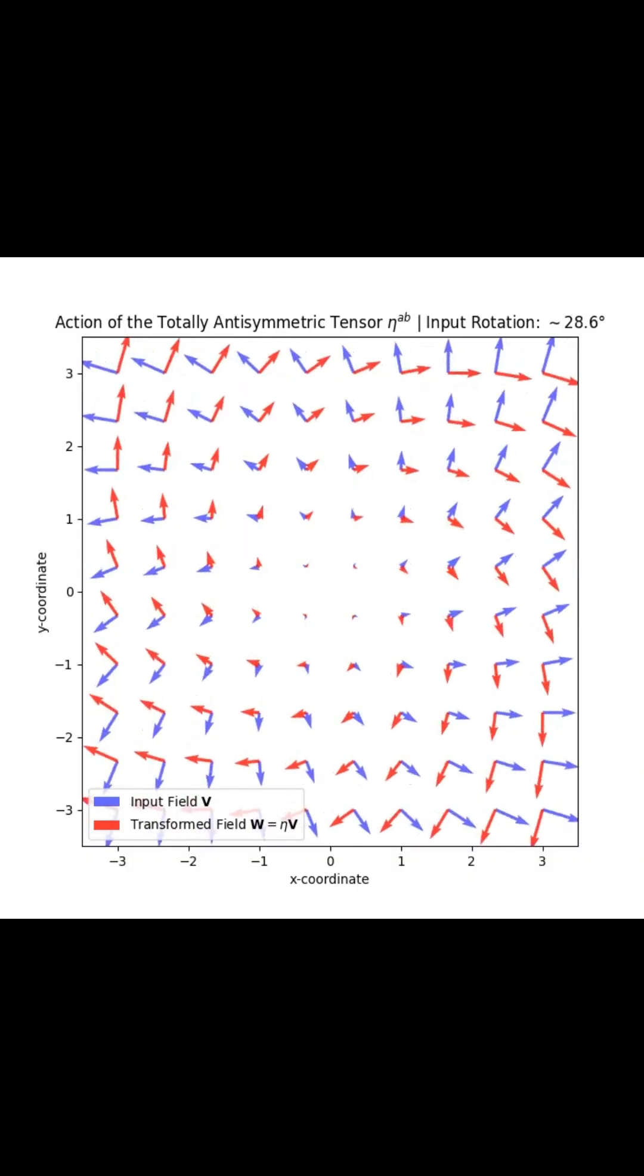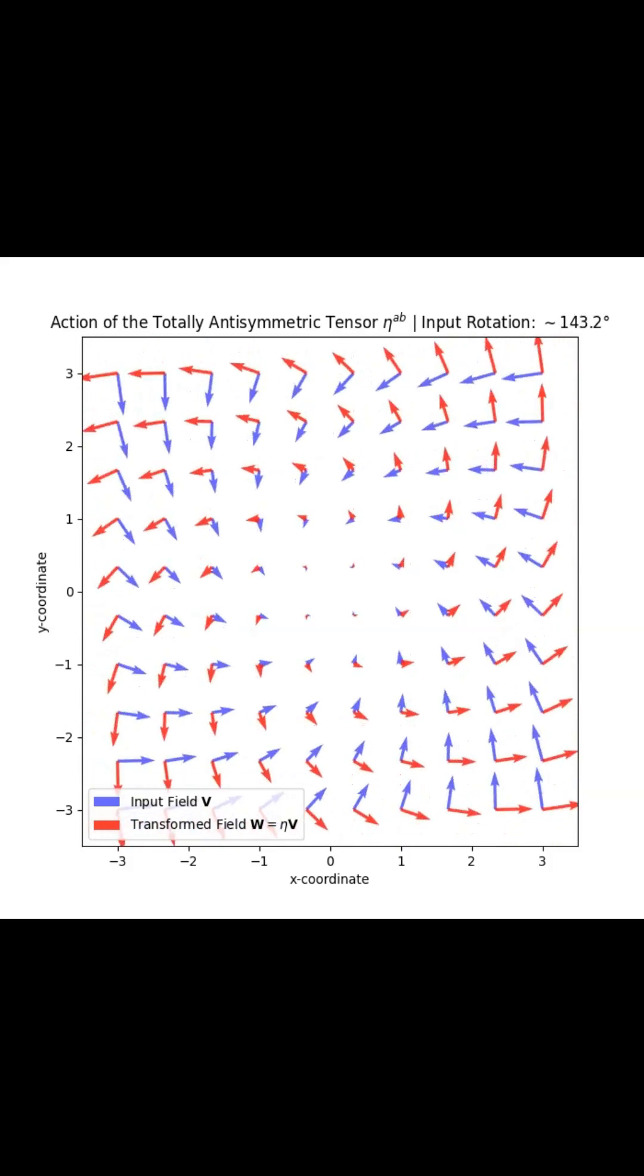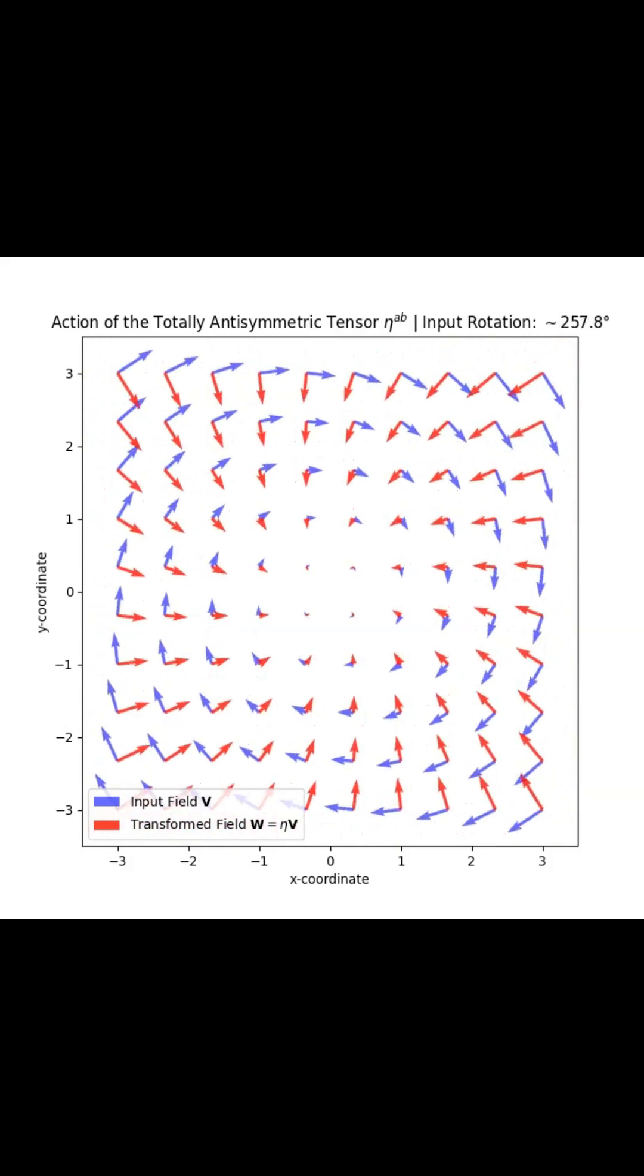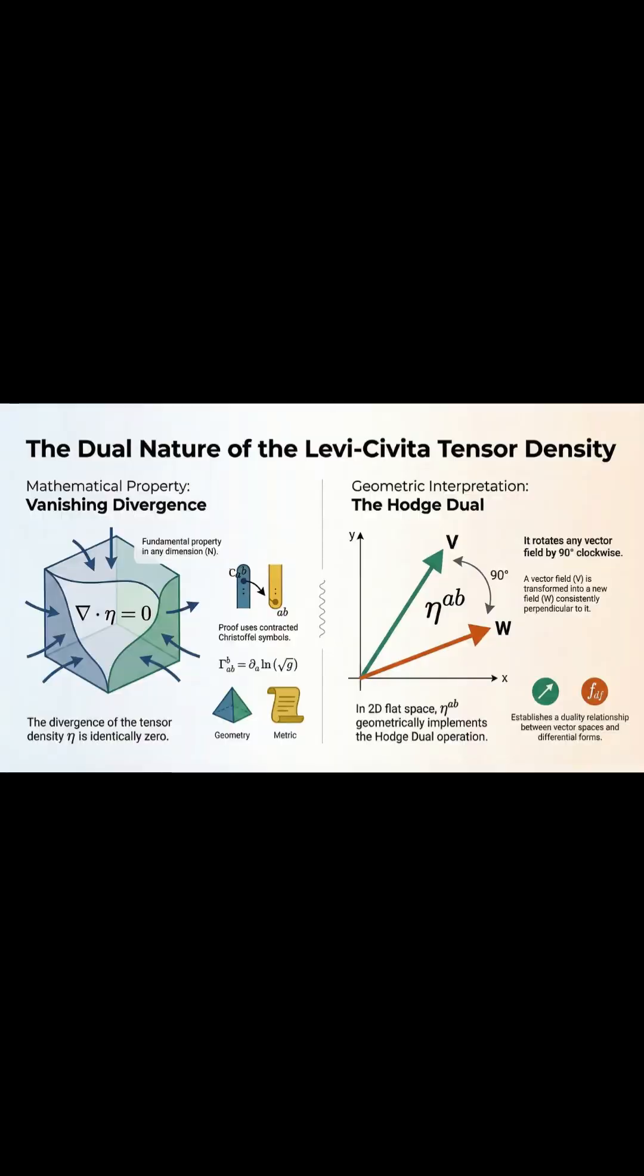Okay, so two big takeaways for you. First, there's this major mathematical identity. Basically, the divergence of this tensor, which kind of measures how it's changing, is always zero. It just vanishes.